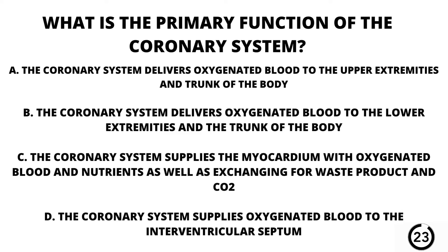Question number four. What is the primary function of the coronary system? A. The coronary system delivers oxygenated blood to the upper extremities and the trunk of the body. B. The coronary system delivers oxygenated blood to the lower extremities and the trunk of the body. C. The coronary system supplies the myocardium with oxygenated blood and nutrients as well as exchanging for waste products and CO2. Or D. The coronary system supplies oxygenated blood to the interventricular septum.